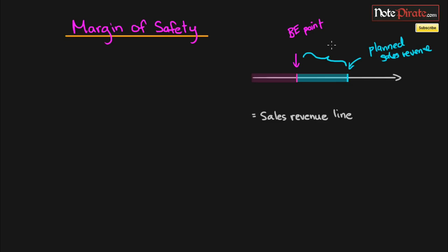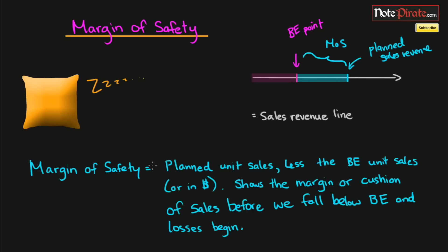point is known as our margin of safety, which is the basis of this tutorial. It's really just like a cushion protecting us before we begin to go into loss territory. Here's a quick definition: margin of safety is the planned unit sales less the break-even unit sales. It can be in units or dollars, and it shows the margin or cushion of sales before we fall below the break-even point and losses begin.